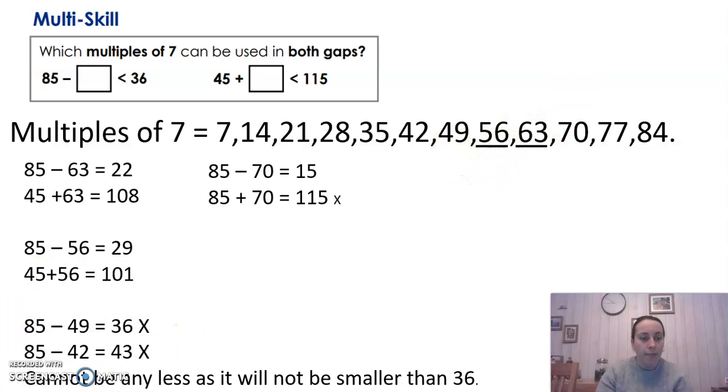So I checked 49. So the next multiple down after 56 is 49. So I tried 49 over here. 85 take away 49 equals 36 exactly. So if I put 49 here, that would not be a less than sign, it would be an equal sign. So it can't be 49. So I put a cross here. Doesn't work.